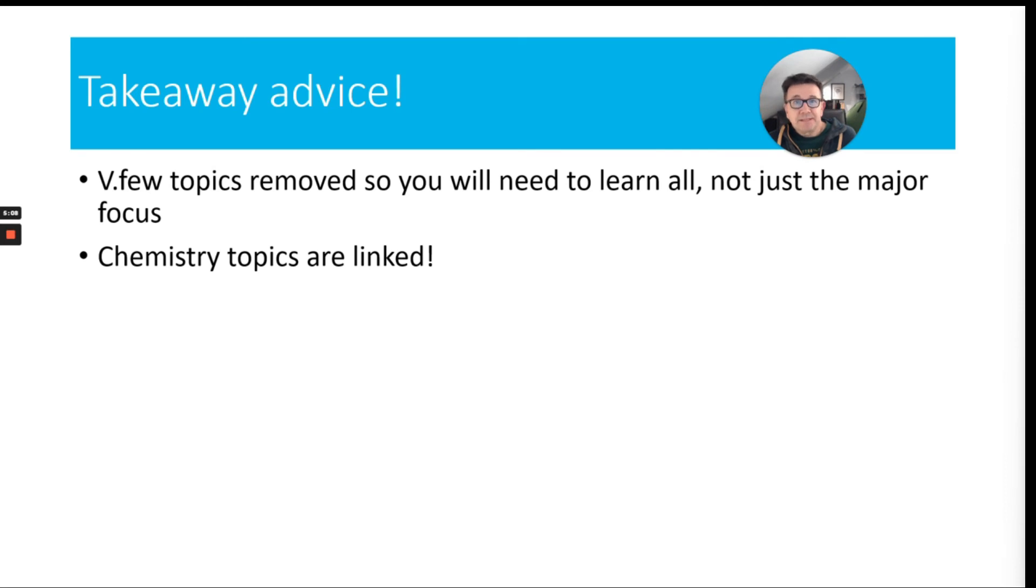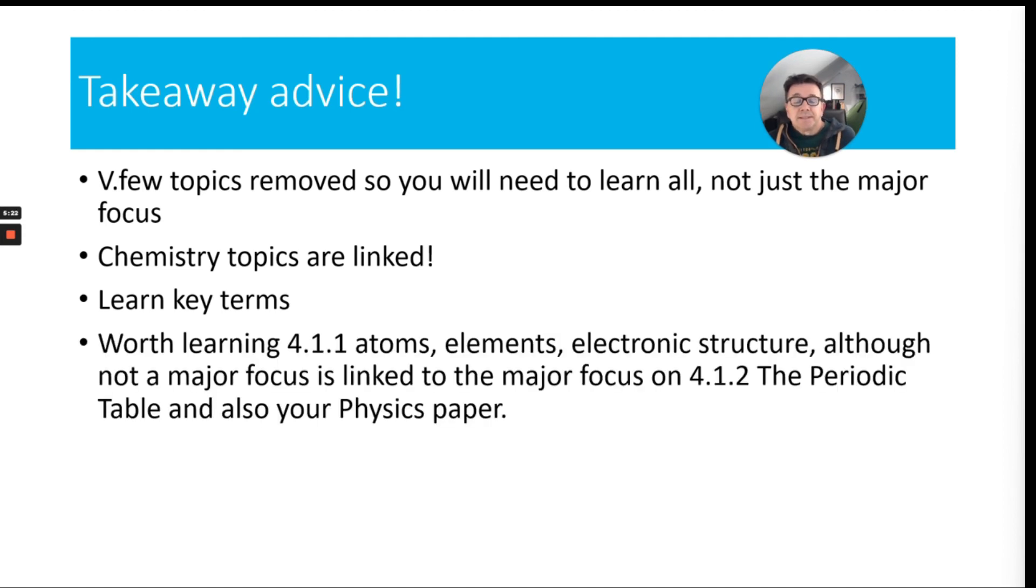As I said, chemistry is very linked. I spoke to a chemistry teacher and they said that it's very hard to separate out different topics. You're going to need to learn key terms. I think key terms are really important in all of your sciences. This is a bit of advice I was looking online for and it's saying it's worth learning 4.1.1 atoms, elements and electronic structure, although it's not a major focus because it is linked to the periodic table. It's also linked to some of your physics paper as well.